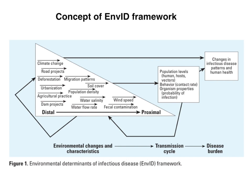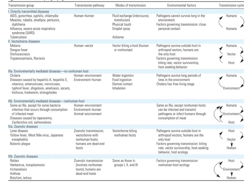When something happens — for example, population density at a particular place rises because of migration — that is a measurable event that can be termed a proximal factor. When an infection rises, the second thing to consider is the transmission cycle: how infections spread from one person to another. It could be vector-borne transmission, zoonosis — where animals are infected and transfer infection to human beings — or anthroponosis, where human beings infect other human beings.